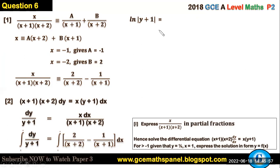For the right-hand side, when you integrate 2/(x+2), that's going to give us 2 ln of the absolute value of (x+2) minus ln of the absolute value of (x+1) plus a constant of integration.